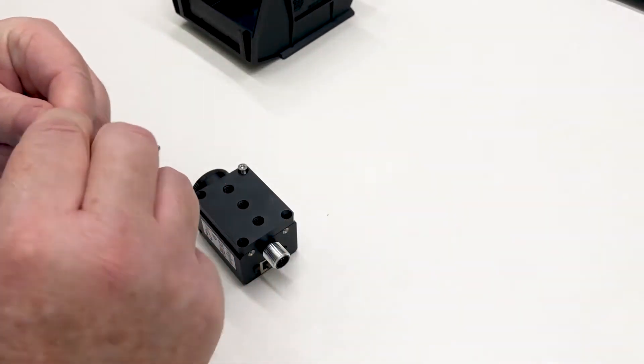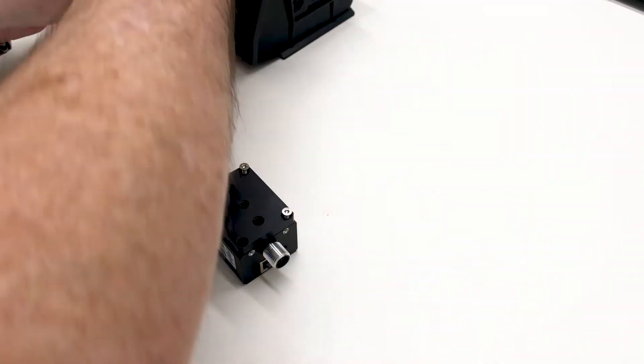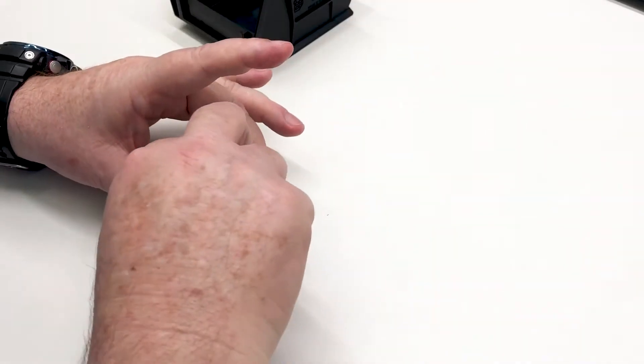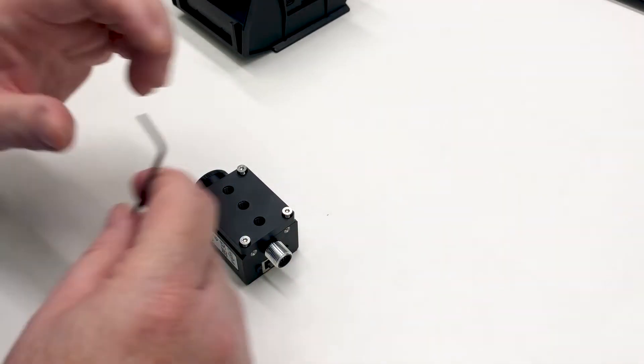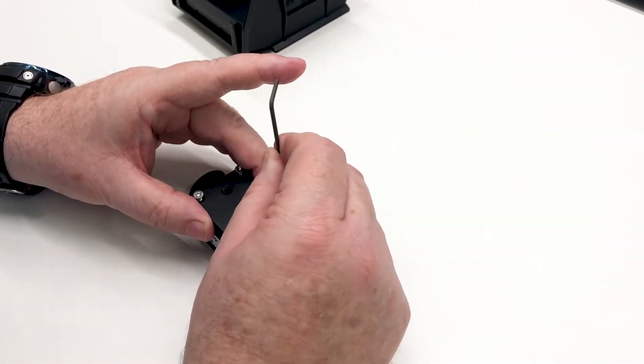Attach it to the camera using the four flathead screws that are provided. You will need a 2mm hex key to tighten the screws.